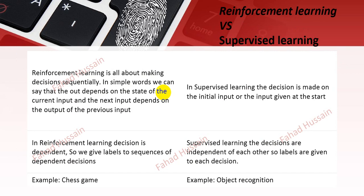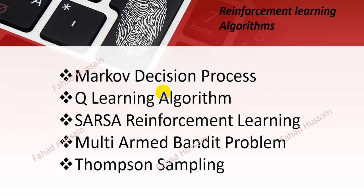Now we are going to discuss different kinds of models. In this session, we will talk about the Markov Decision Process, the Q-learning algorithm, and the Deep Q-learning algorithm — as well as what reinforcement learning is, the multi-arm bandit problem, and Thompson sampling. I have covered all these topics separately in the machine learning course, both theoretically and practically. Here in deep learning, we will focus on Q-learning with the Bellman equation and deep Q-learning, both theoretically and practically.